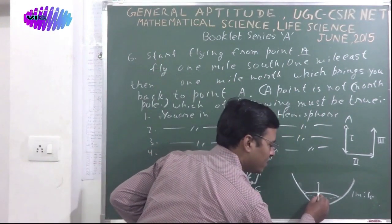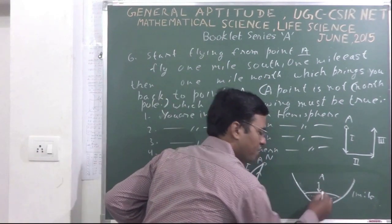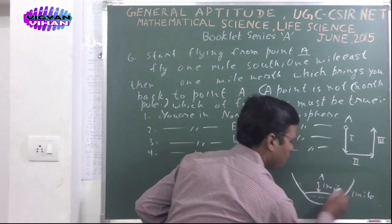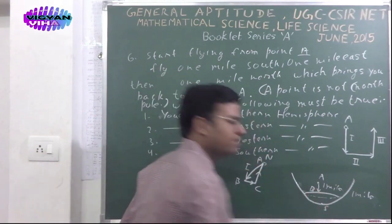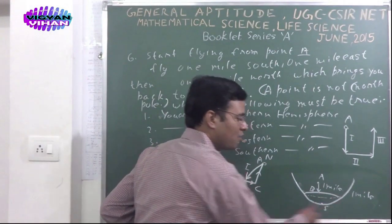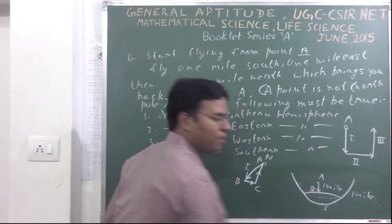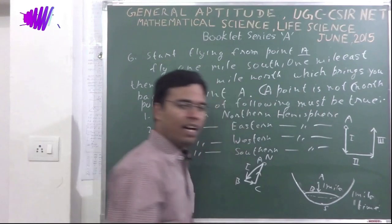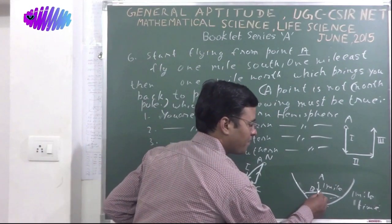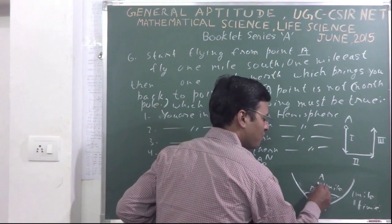If you start your journey from A, in the first step, fly towards south 1 mile, you reach at the point B. In the second step, if you fly from B, 1 mile towards east, then the complete circle of 1 mile will be completed one time. Again, you reach at point B. In the third step, when you start flying from B and fly towards north, you reach at point A again.